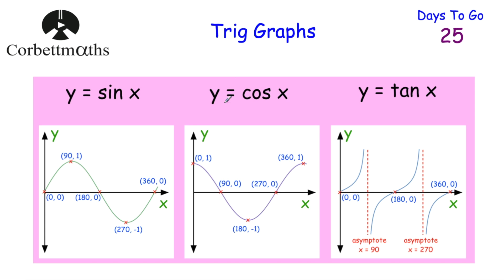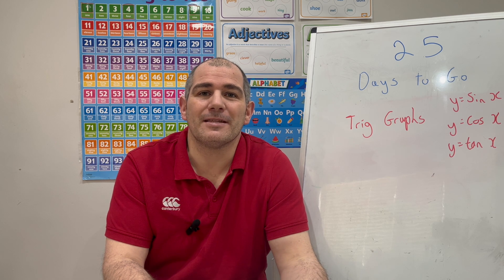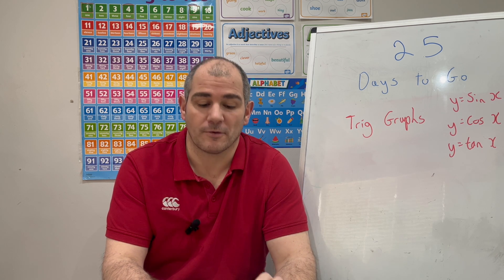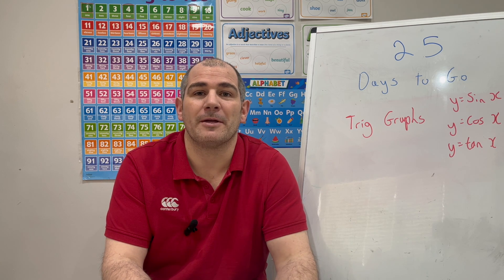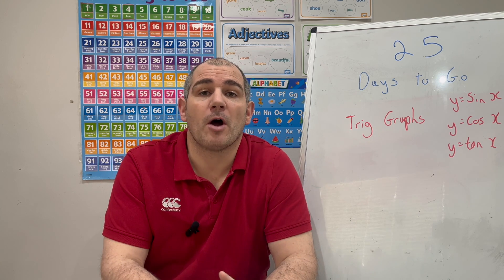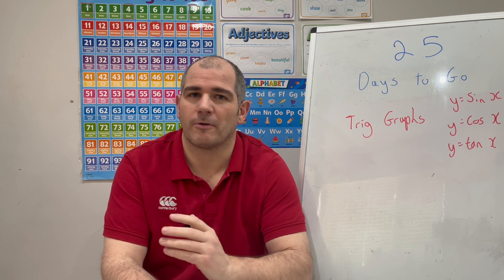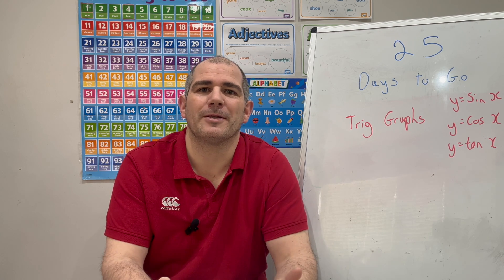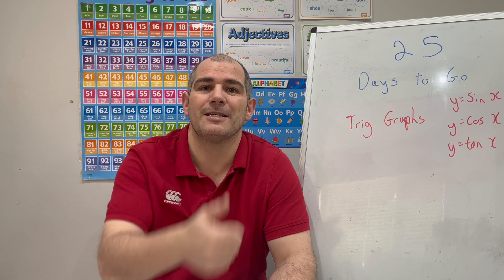So in this video we've gone through the graphs of the trigonometric functions: y equals sine x, y equals cos x, and y equals tan x. It's important to know what those graphs look like, so remember to write them on your cheat sheet, put them on your windows using window pens, or get someone to quiz you on the key points. Revision card number 39 covers trig graphs as well. Keep up the hard work — there's 25 days to go, we're three quarters done, and then you'll be doing that first paper. Good luck, and I'll see you tomorrow at 3 o'clock. Cheers, bye.